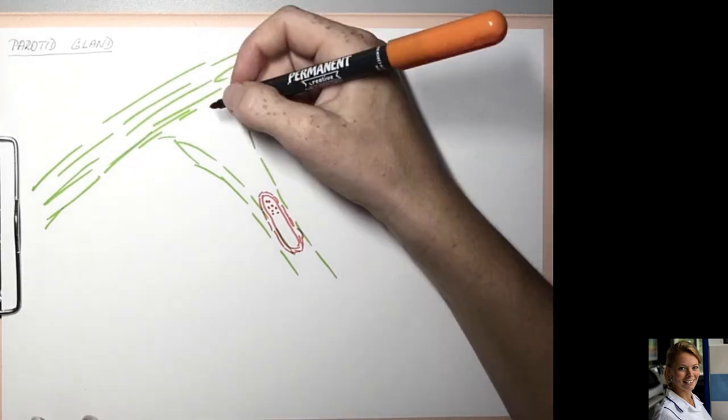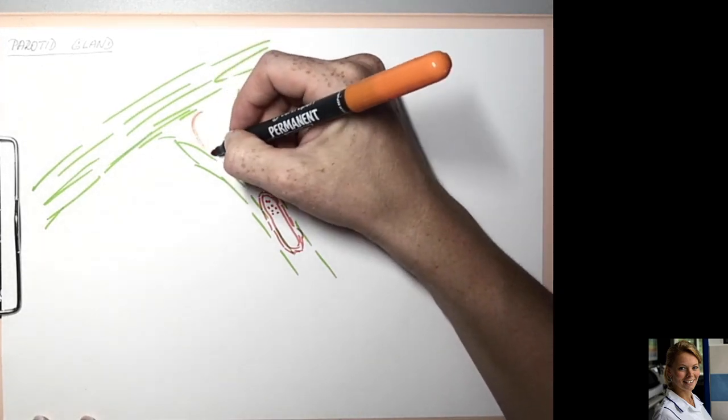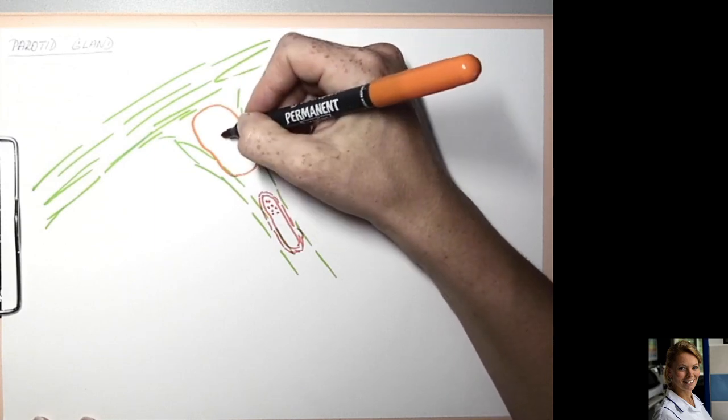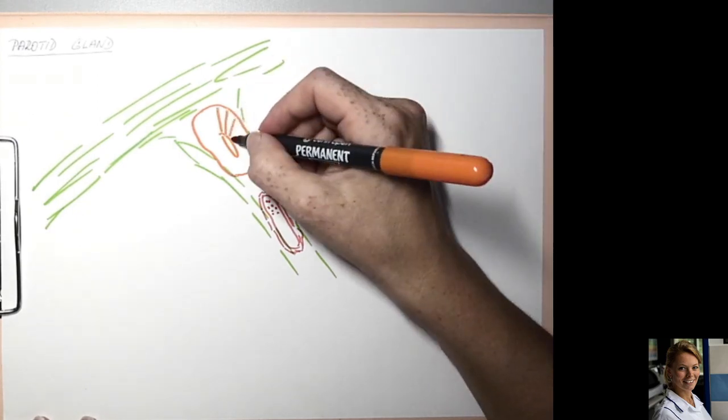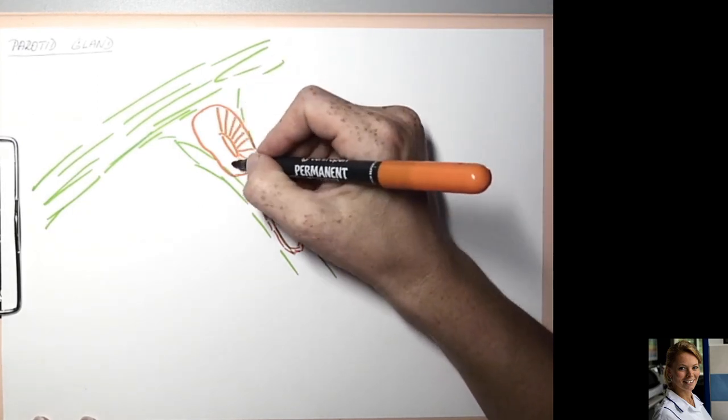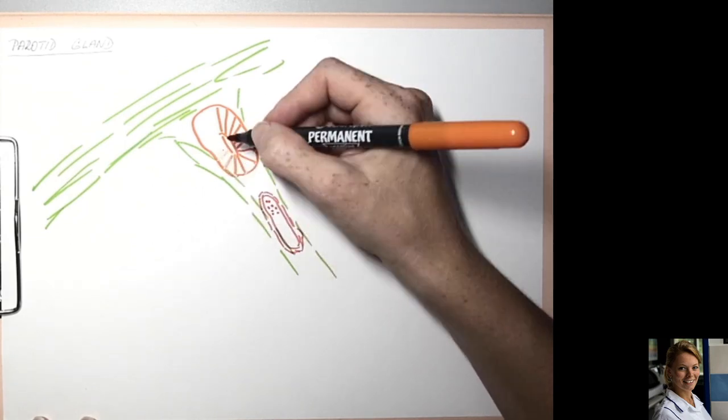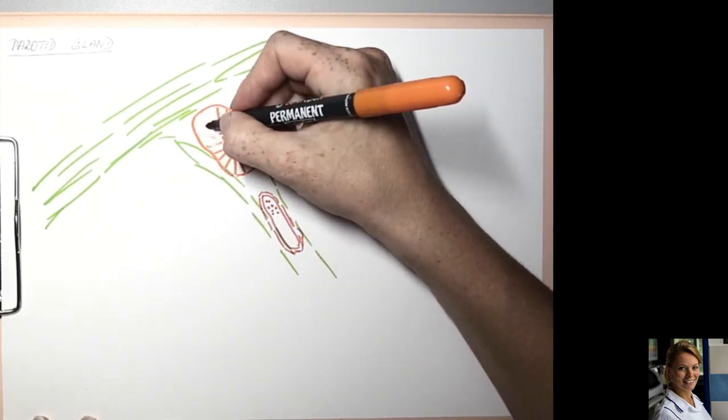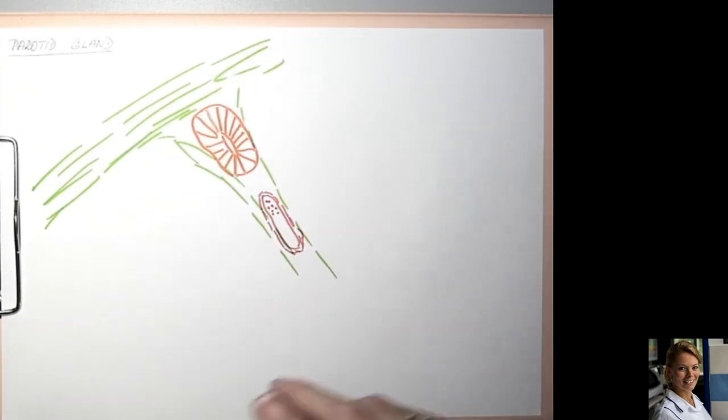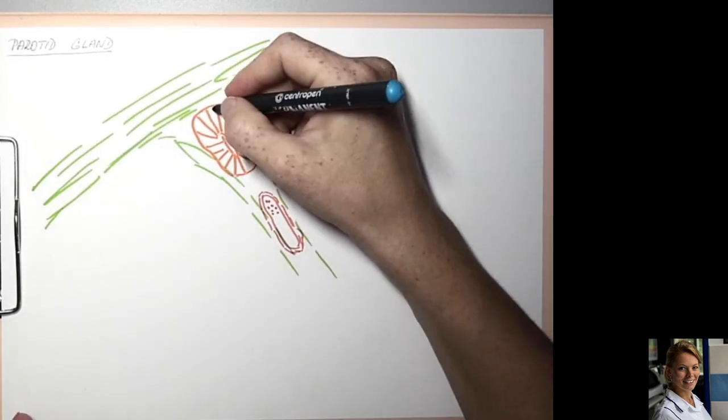The interlobular duct is lined by simple columnar epithelium. A larger interlobular duct is lined by stratified columnar epithelium, with elongated cells with elongated nuclei.